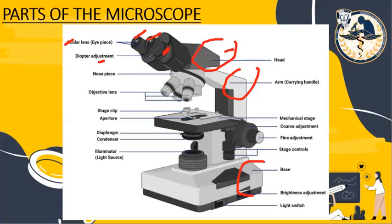Next, we have our objective lenses: the low power objective (LPO), the high power objective, and the oil immersion lens. Each lens has its own magnification power, used to clearly magnify our object. We also have the nosepiece, which holds our objective lenses and is revolving — we can also call it the revolving nosepiece. You can rotate it to switch between LPO, HPO, or oil immersion.